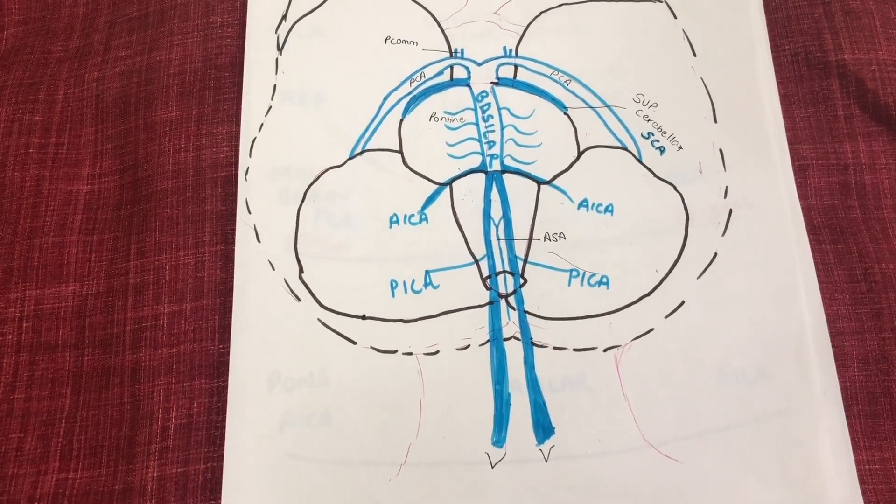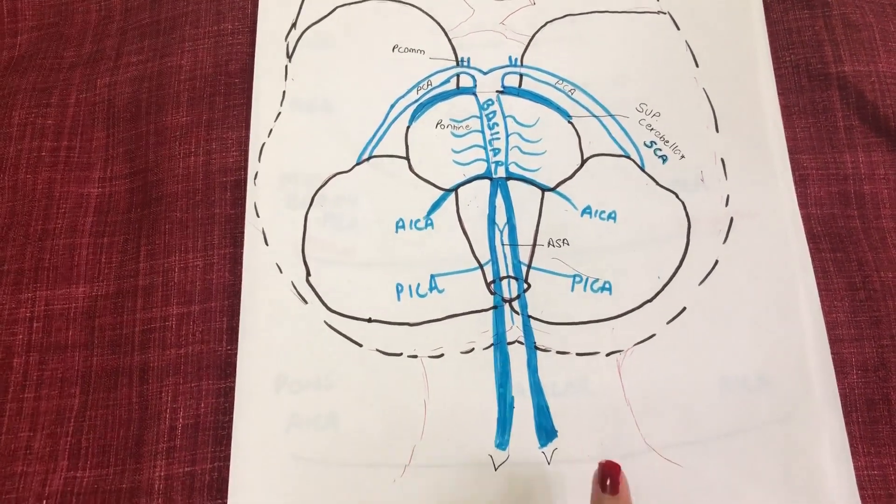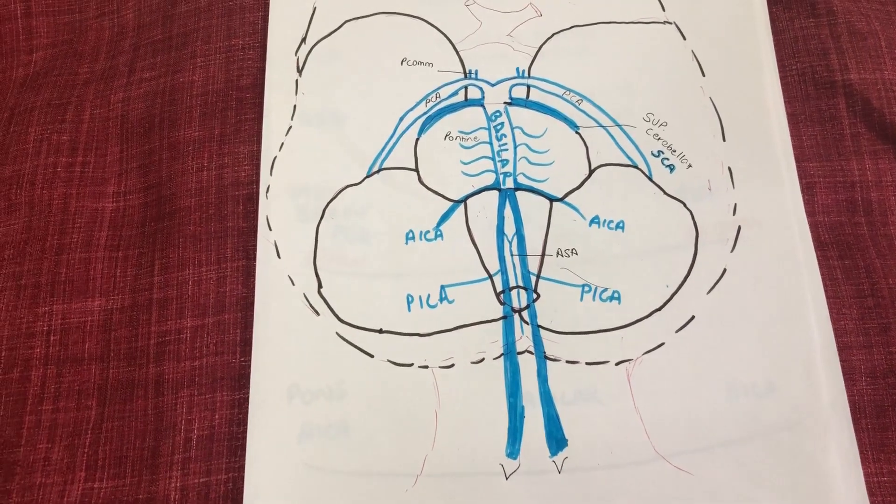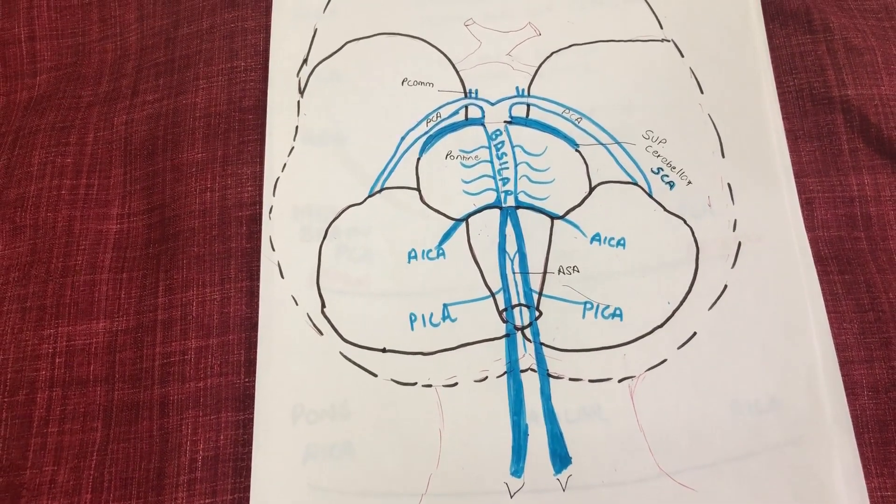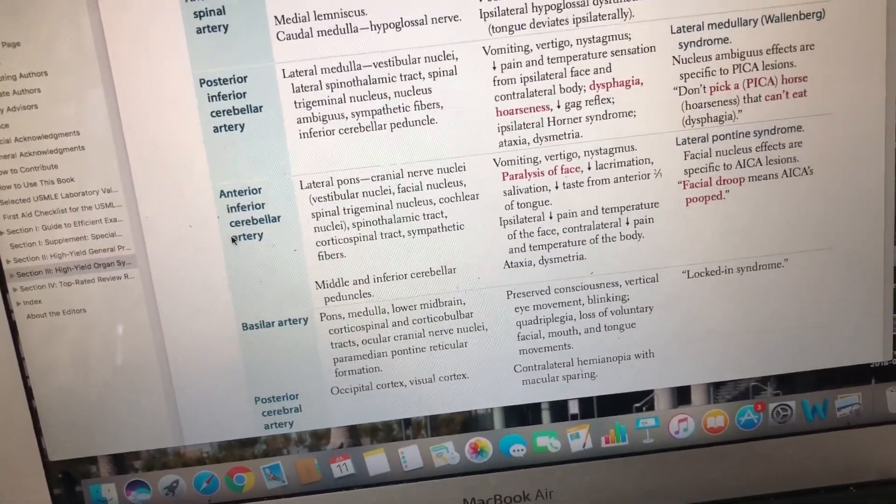Now that we have the origination down, let's see where the vertebral arteries actually end up going. I would also recommend that at this time you open the stroke lesion page so you can refer to the different arteries and their lesions while we talk about them here.